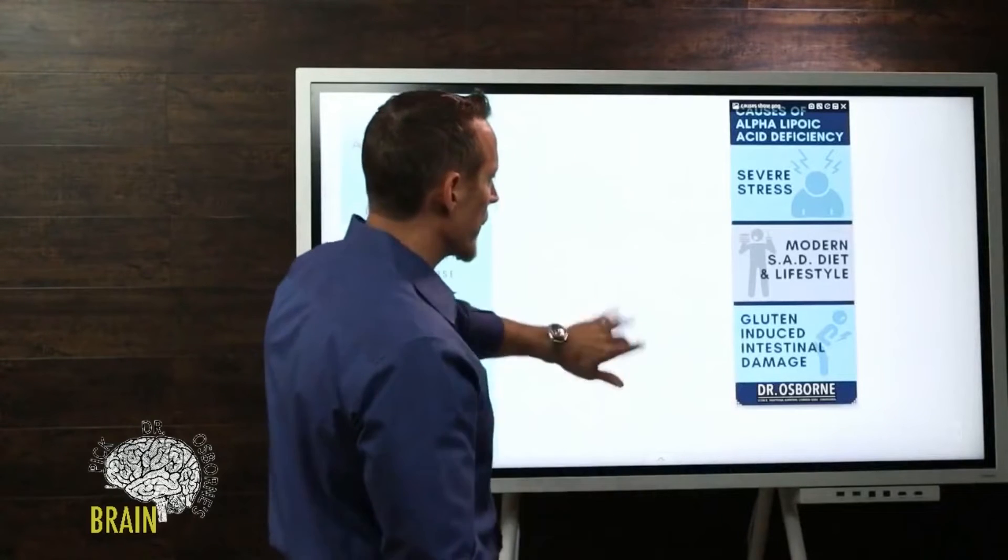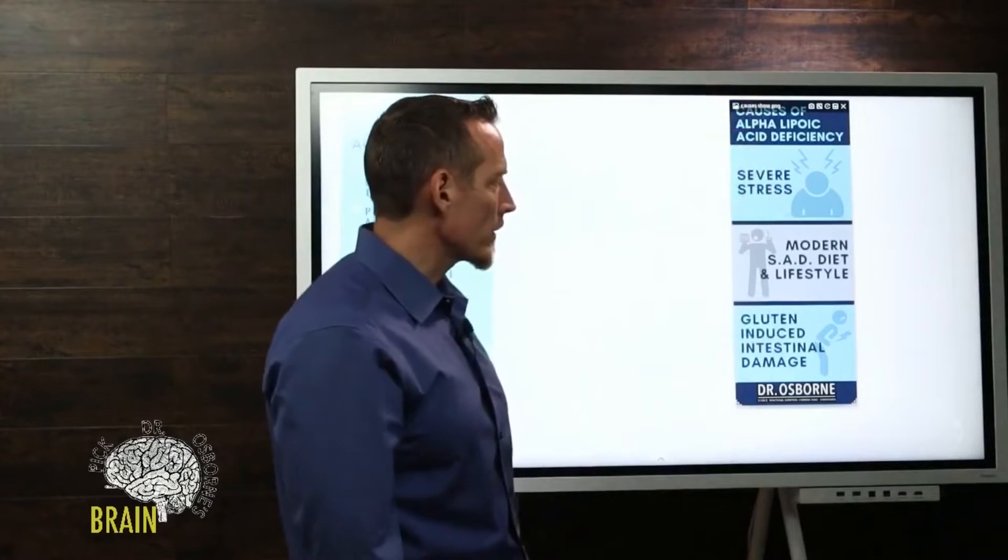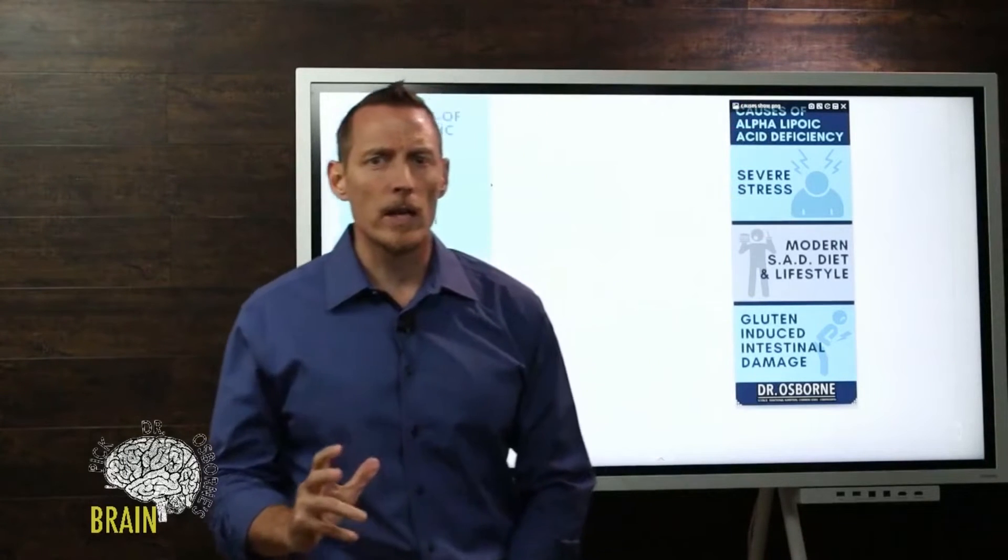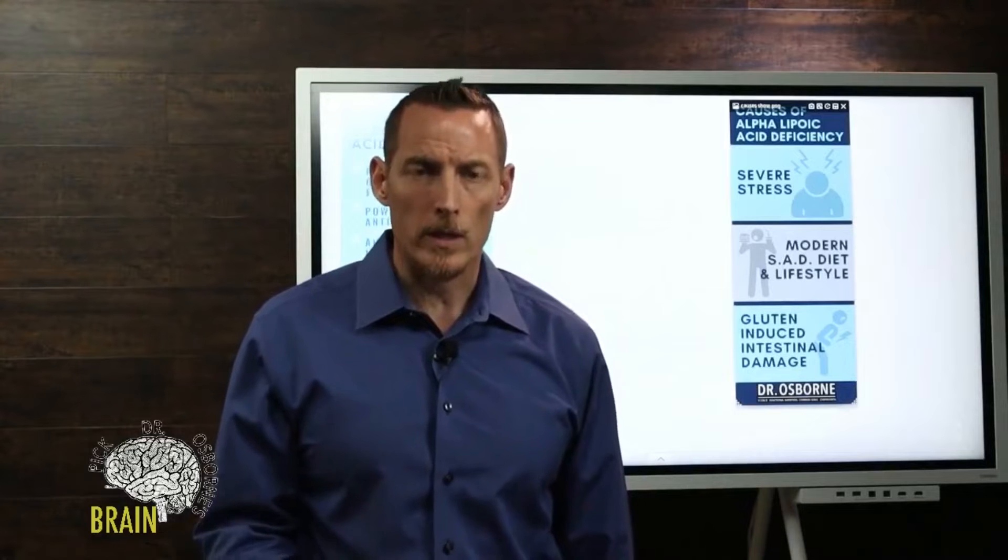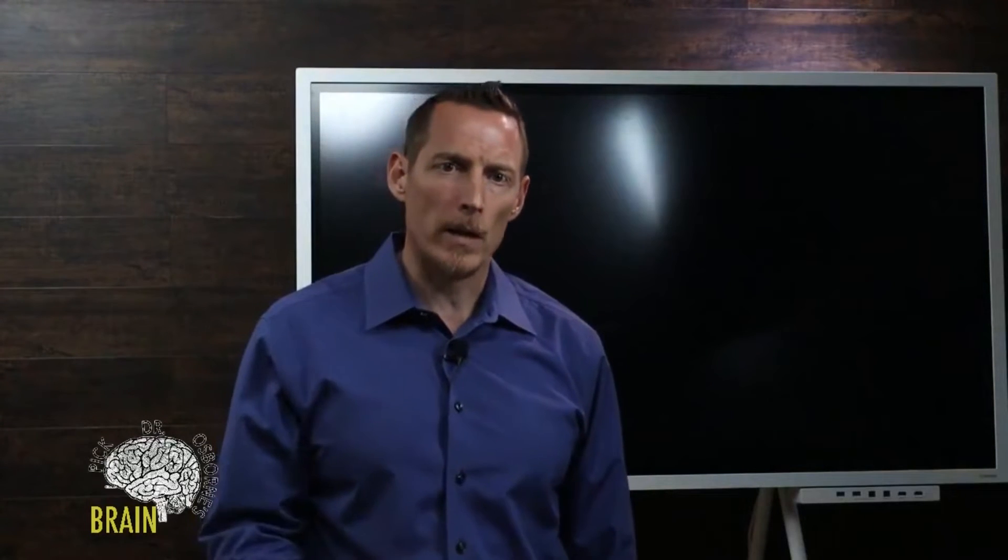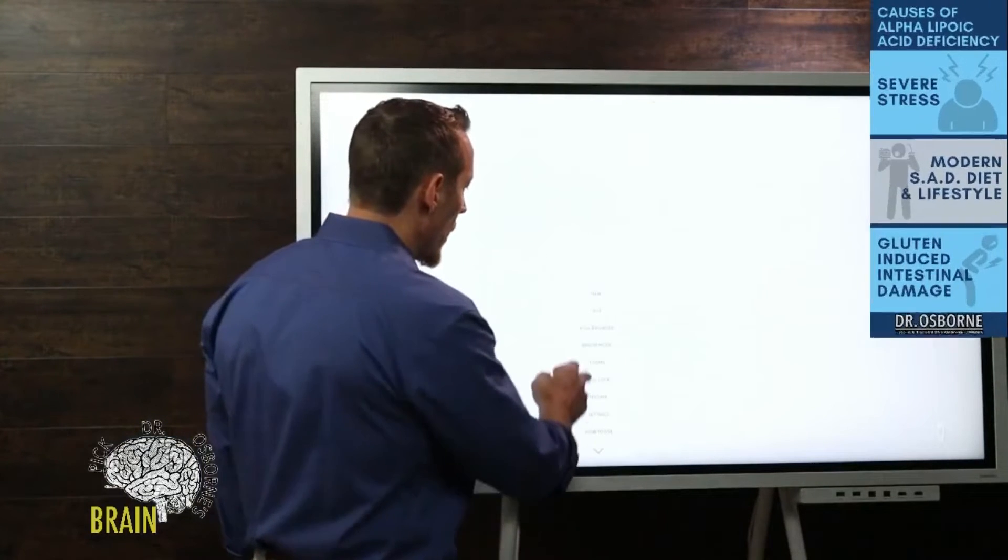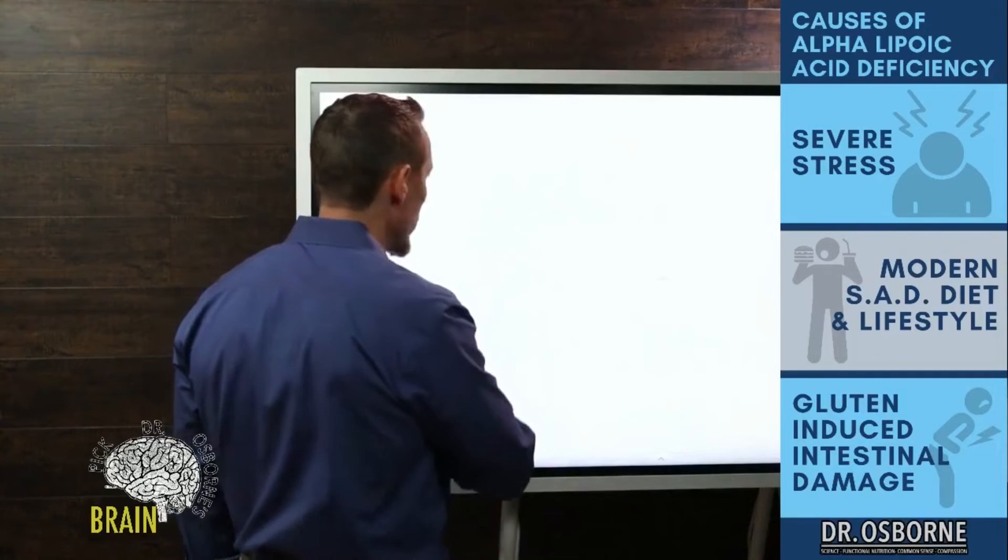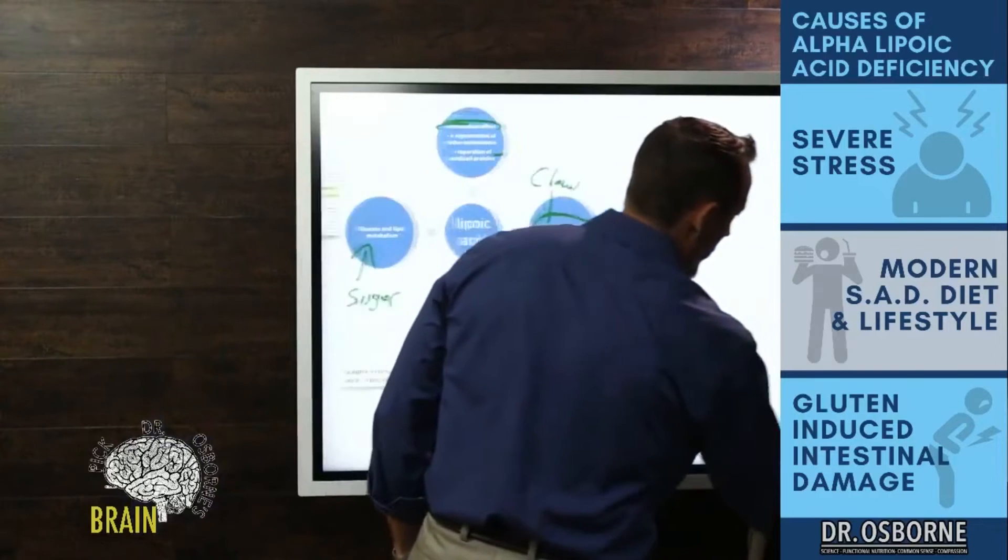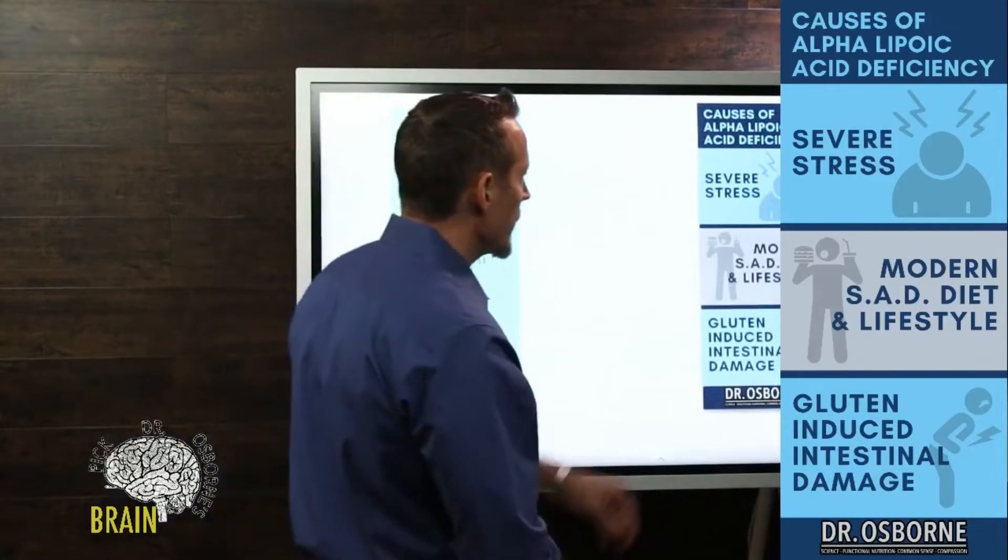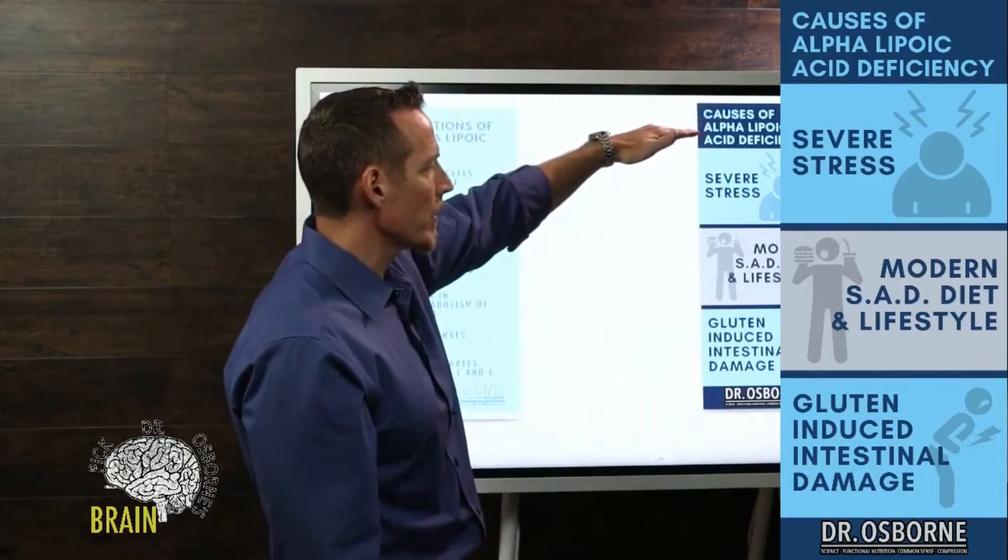Causes of alpha lipoic acid deficiency. I said earlier that alpha lipoic acid was not essential, meaning your body can produce it, synthesize it internally if you've got healthy mitochondria. Those of you with chronic degenerative diseases, mitochondrial dysfunction, chronic fatigue syndrome, fibromyalgia, and other chronic degenerative inflammatory diseases might actually see a benefit from utilization of alpha lipoic acid.